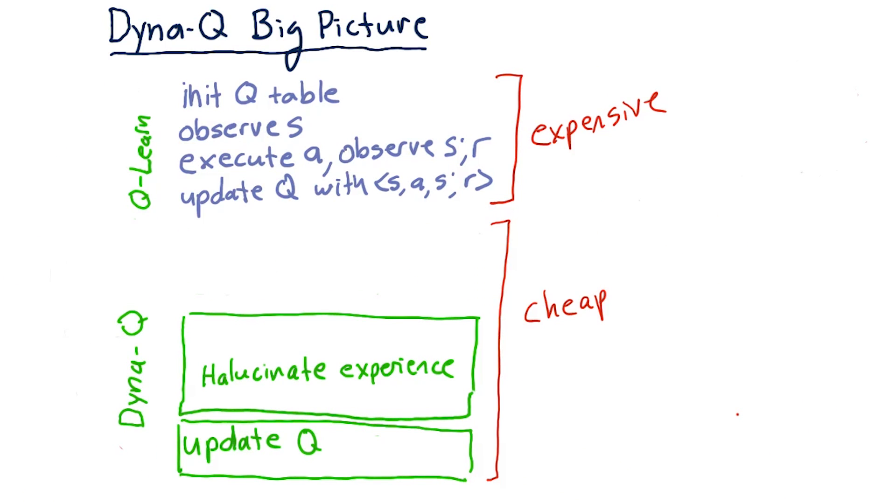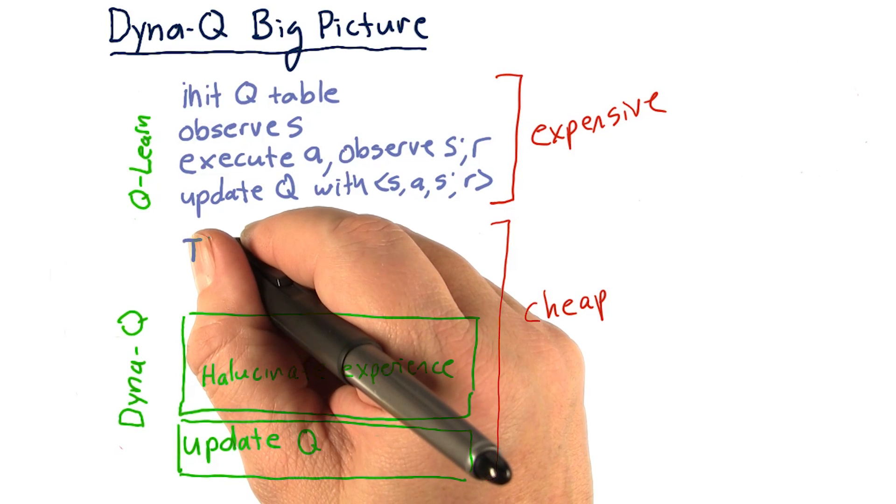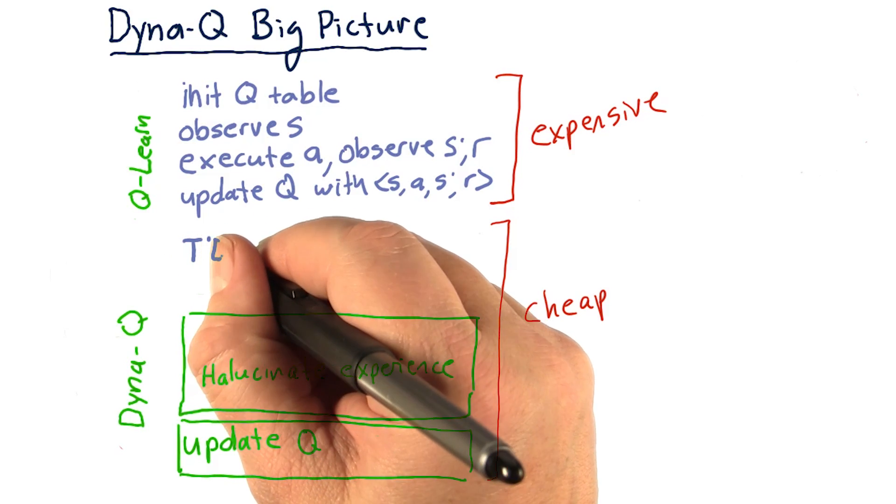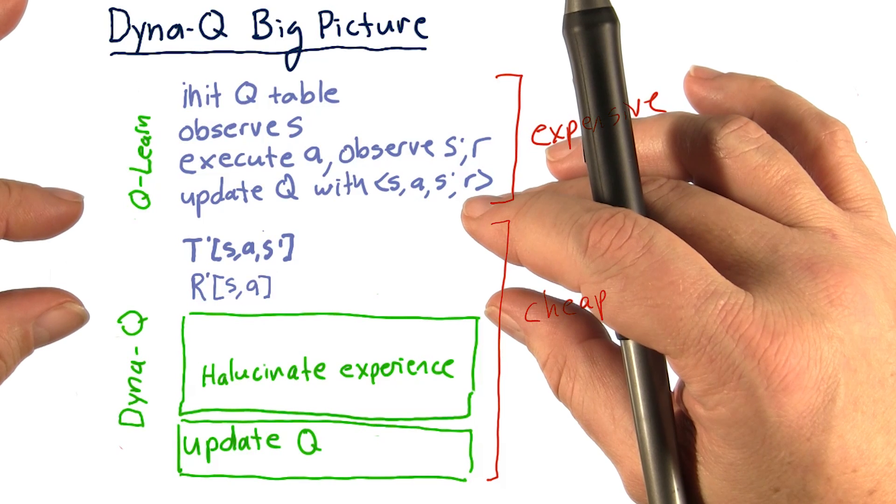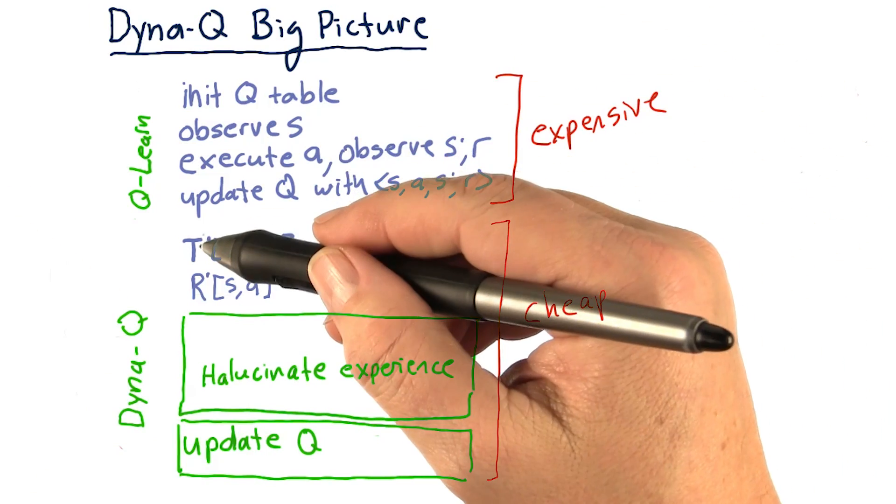So in this part where we update our model, what we really want to do is find new values for T and R. The point where we update our model includes the following. We want to update T,